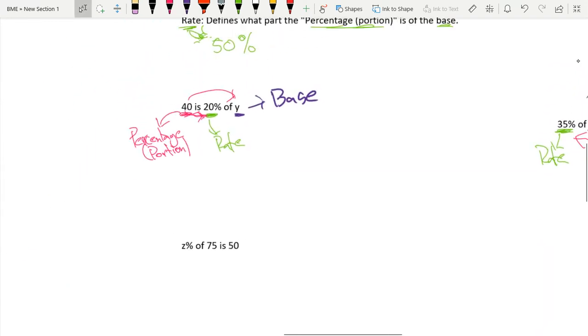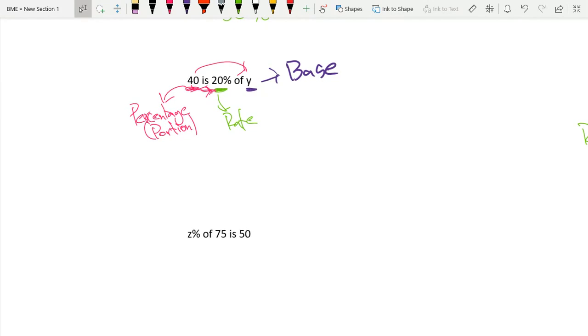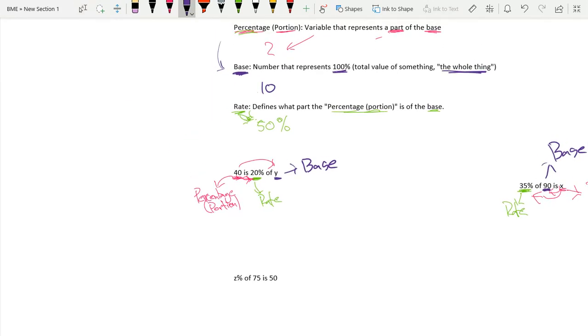Now we have Z% of 75 is 50. So in this problem, let's always start by identifying the base. That's usually the easiest thing to identify. So the base is 75, right? Because we're taking a percent of 75 and we're making that 50. So this is our base. Now, the next one we'll go to is our percentage, our portion. So Z% of 75 is 50, so 50 is going to be our percentage or portion because this is just a part of the base. And Z% is just our rate. Generally, if the value ends in a percentage, it's almost always the rate. That's a big clue for your rate.